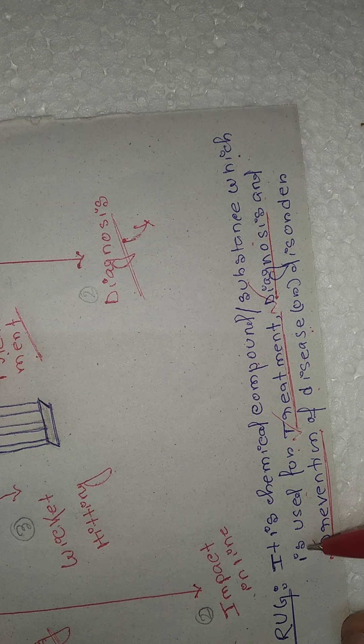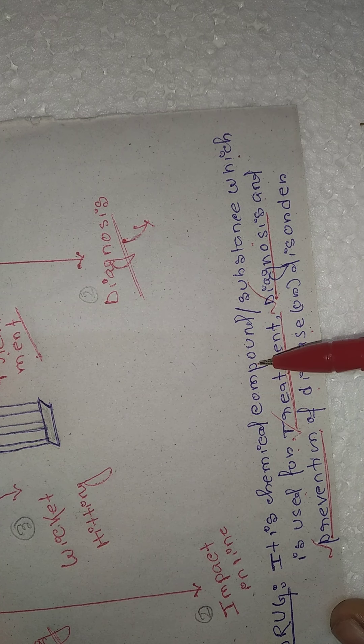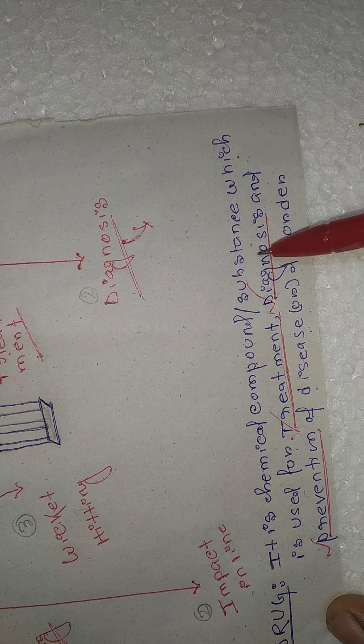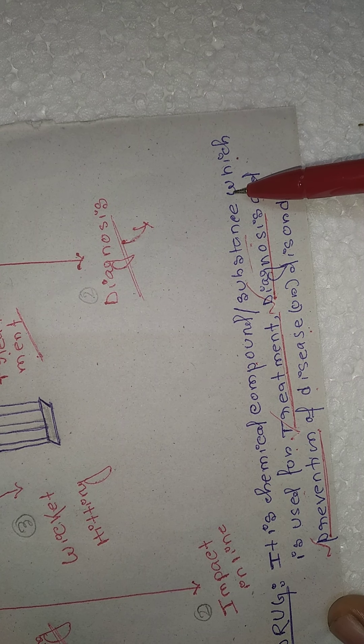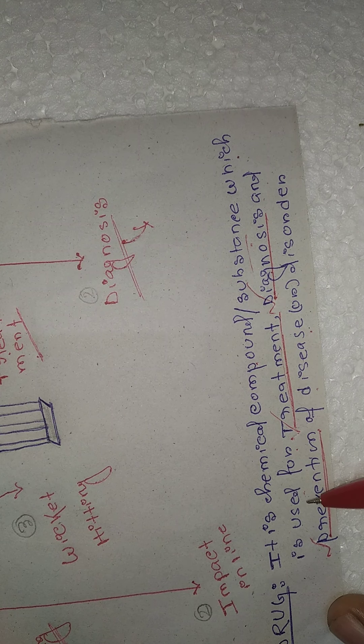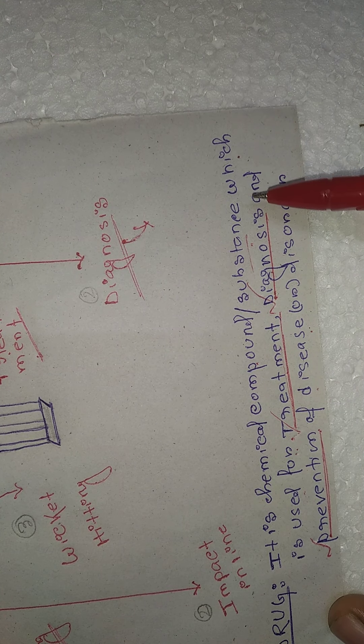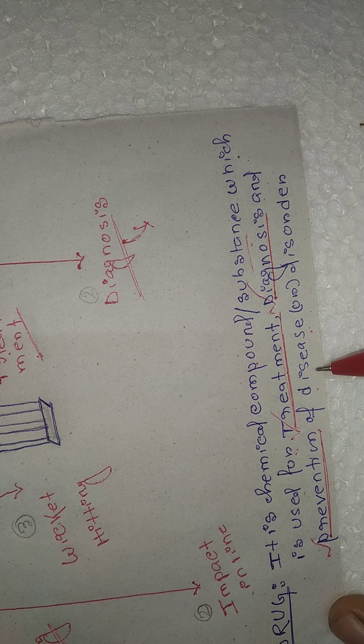And that is the complete definition of a drug: it is a chemical compound or chemical substance which is used for treatment, diagnosis, and prevention of disease and disorder.